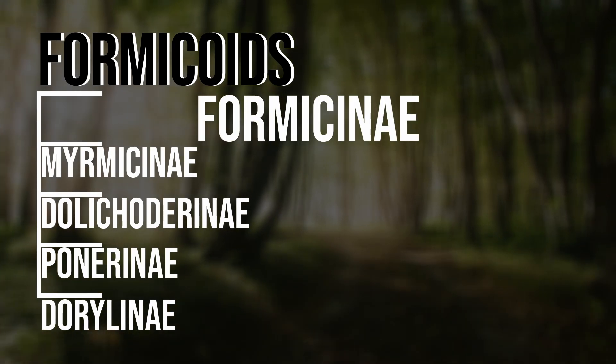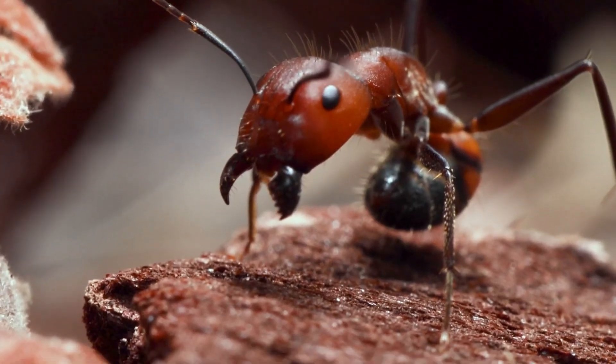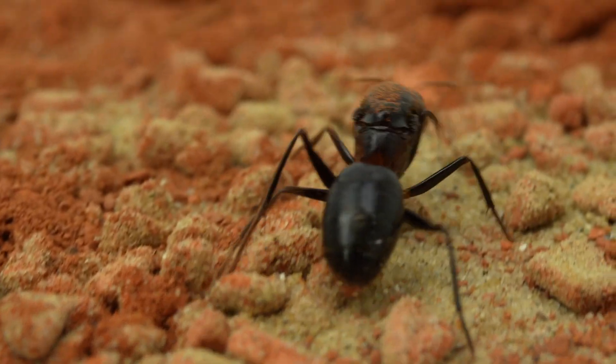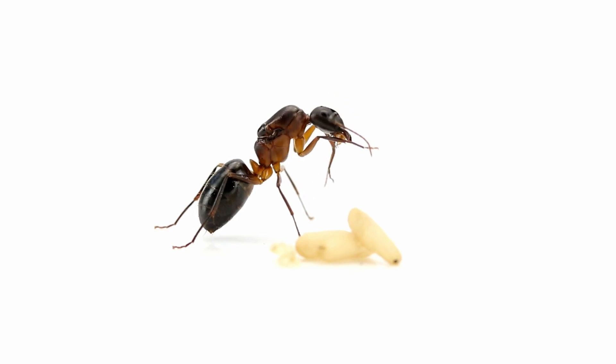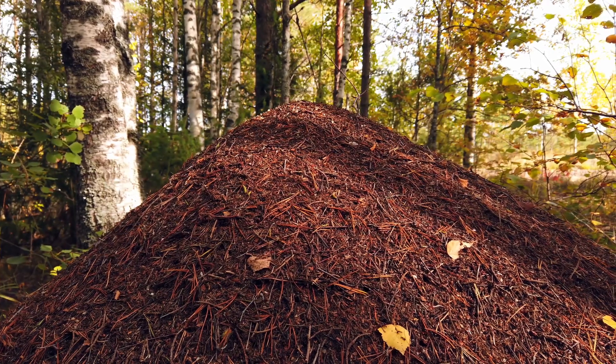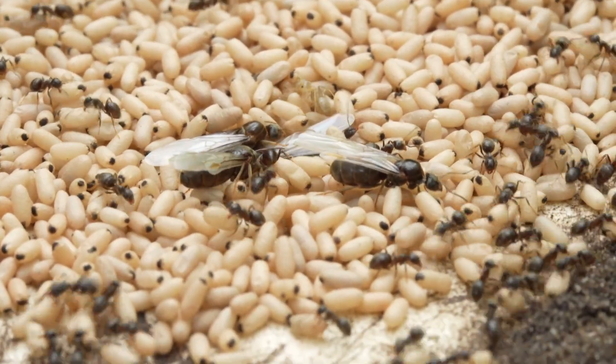Formicinae — the acid sprayers. These ants don't sting, they spray acid. Formic acid, to be exact. What do they have in common? A single petiole node. They have an acidopore to spray acid on threats. They are super common in both forests and urban areas. Some examples: Camponotus — a third of the species belonging to the Formicinae are actually Camponotus species, the famous carpenter ants. Formica — some species are mound builders or slave makers. Lasius — small, classic garden ants, specialized in raising aphids. These are some of the most numerous species in the temperate zones, but they can't compete with the next group.